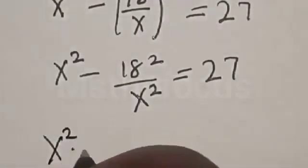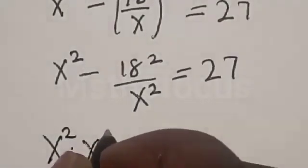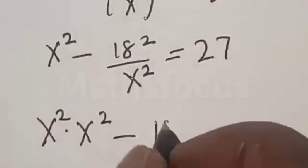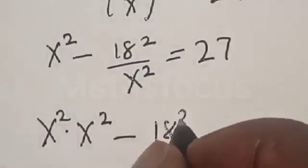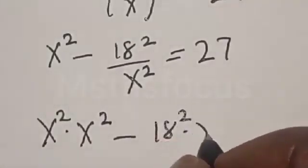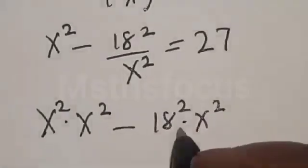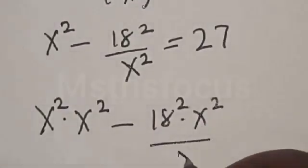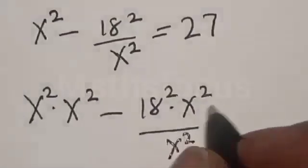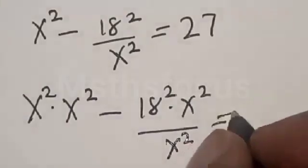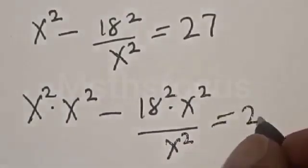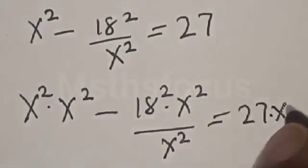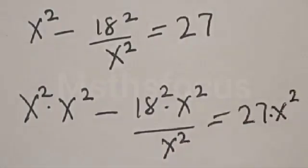Now let's multiply all terms by x squared. x squared multiplied by x squared minus 18 squared multiplied by x squared divided by x squared.